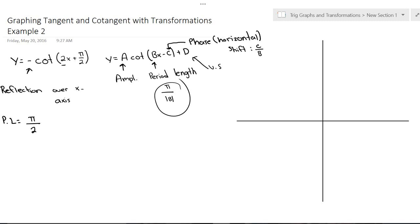Next, we've got our phase shift. And that's going to be c divided by b. Let's think about this for a second. Our formula calls for bx minus c. And what we've done is we've got 2x minus something gives us positive pi over 2.